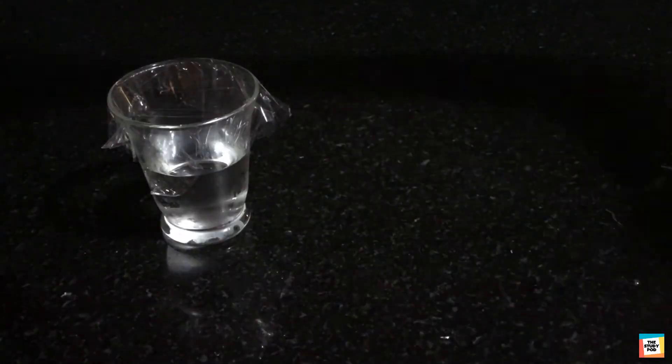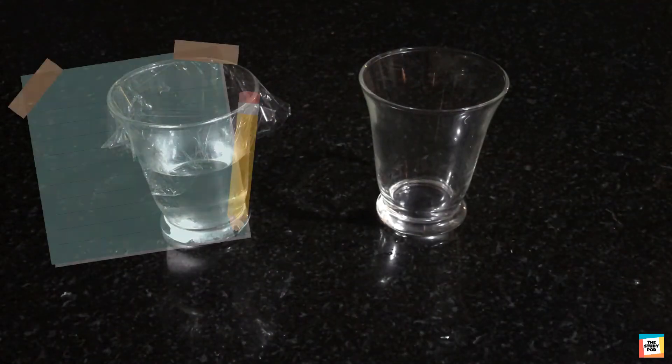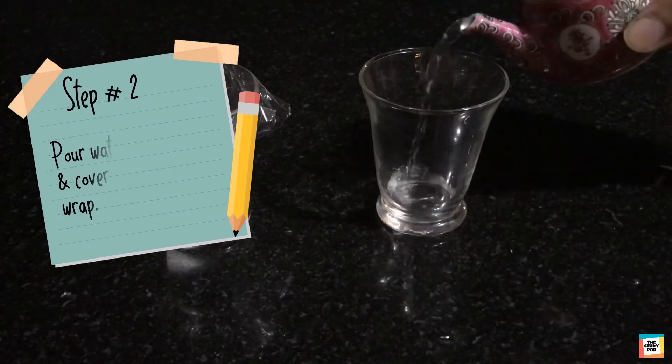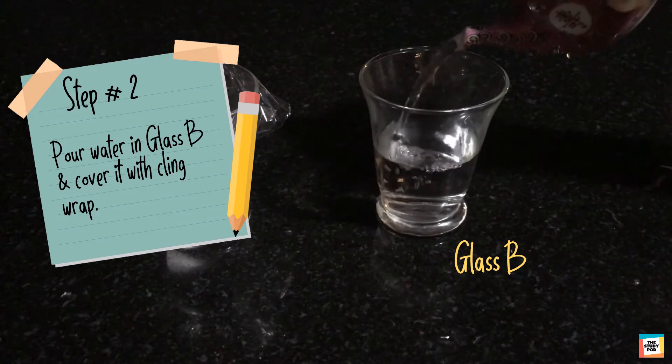And take the other glass. Step 2. Pour water in glass B. And quickly cover it tightly with cling wrap.